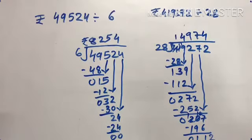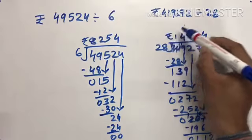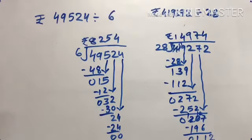112 divided by 28 is 4. So our answer is 14,974.